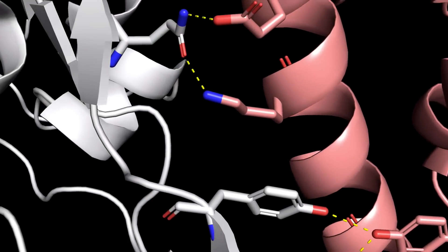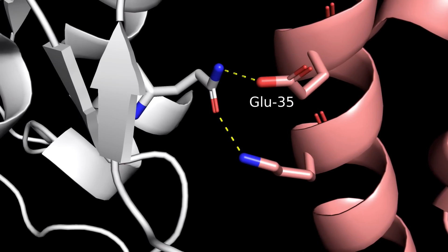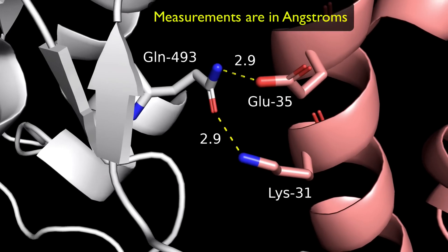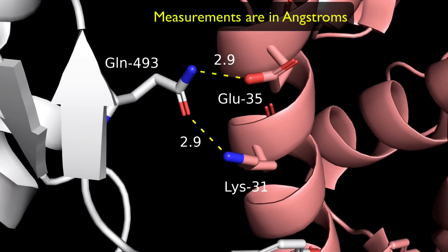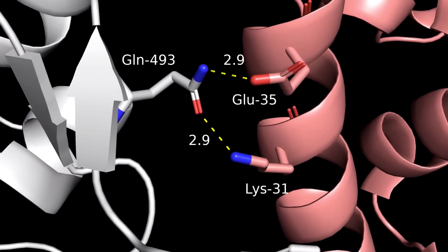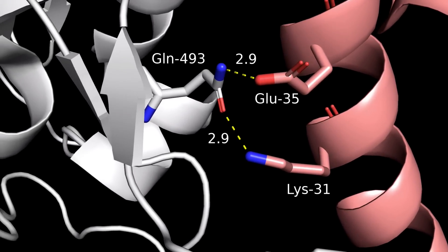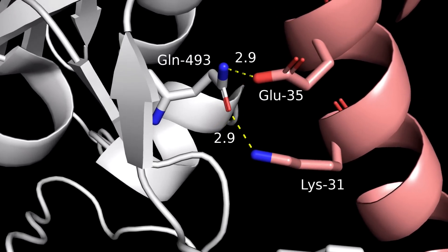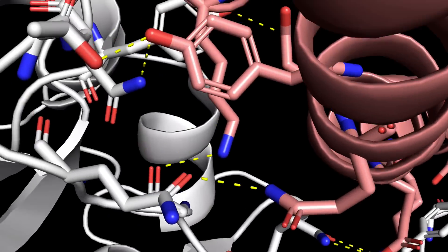Moving along the ACE2 alpha helix, we have a glutamate side chain, which is deprotonated at pH 7.4, and a lysine residue that carries a positive charge at that pH. These residues are both involved in hydrogen bonding with the amide of a glutamine side chain. Notice that these hydrogen bonds are relatively short, owing to the strong hydrogen bonds that can form when charged amino acid side chains are involved.